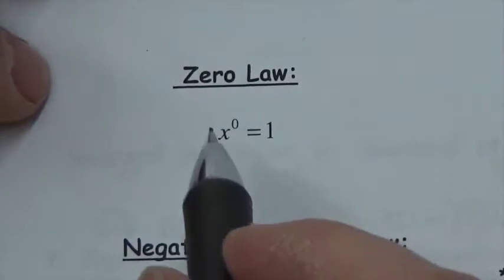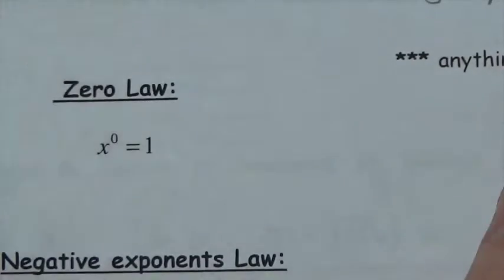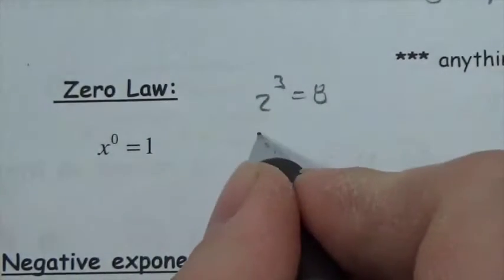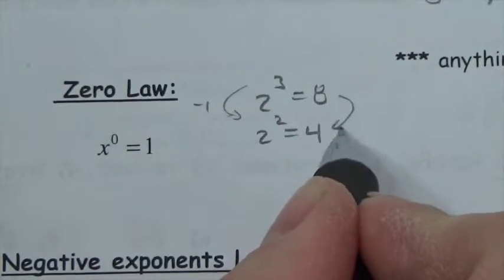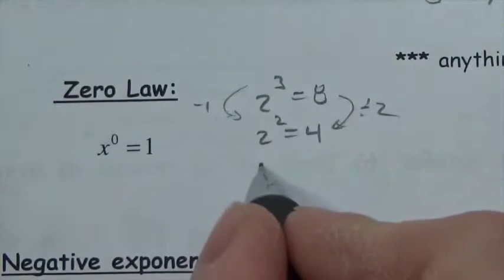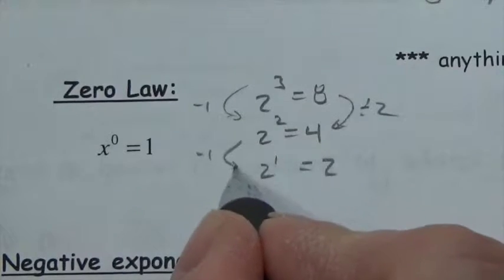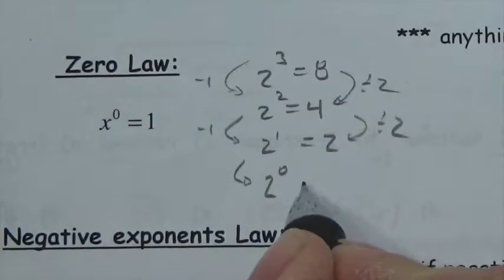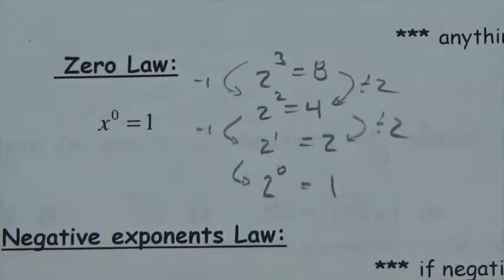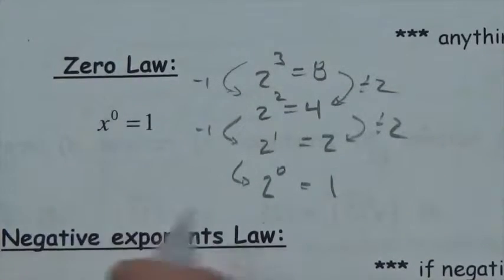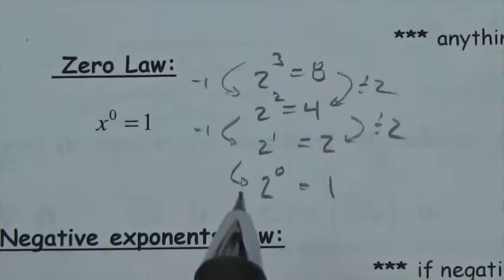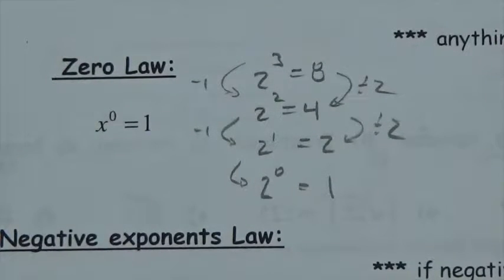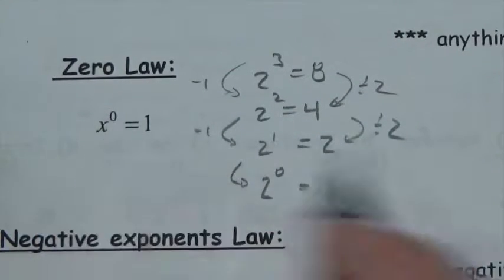x to the zero equals one. The pattern is straightforward: two cubed is eight, two squared is four — each time I subtract one from the exponent and divide by two on the value side. Two to the one is two; following the pattern, two to the zero is one. That has to be true. Please do not misinterpret x to the zero as x multiplied by zero — it's x to the exponent zero, and the rule is different.